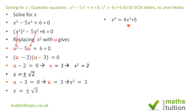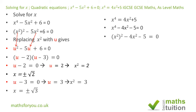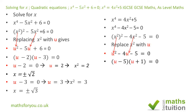For the second exercise, we have x to the power 4 equals 4x squared plus 5. Taking 4x squared plus 5 across to the left-hand side, the signs change, giving x to the power 4 minus 4x squared minus 5 equals 0. As before, x to the power 4 is the same as x squared all squared, so we have x squared all squared minus 4x squared minus 5 equals 0. Replacing x squared with u, we get u squared minus 4u minus 5 equals 0.